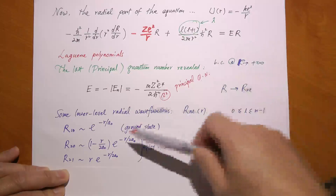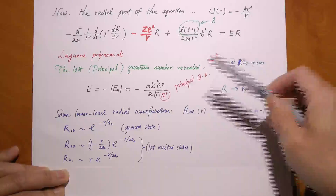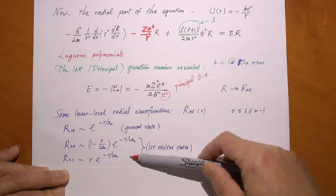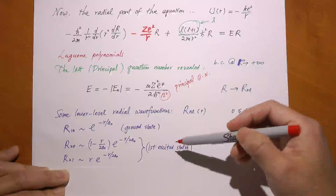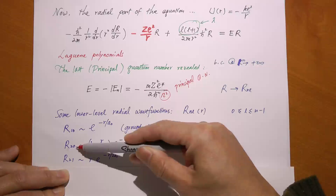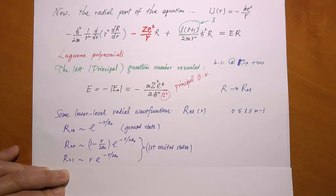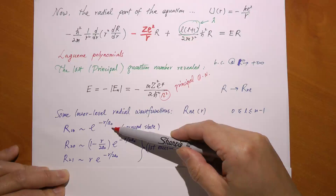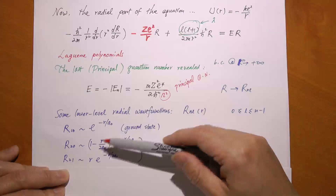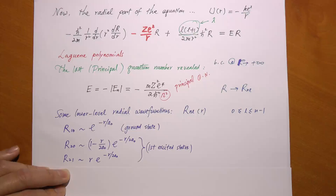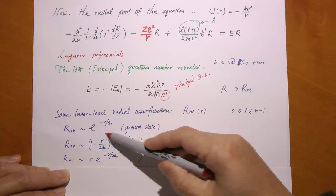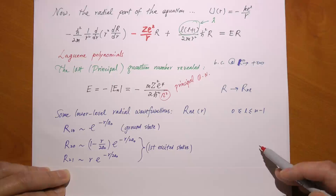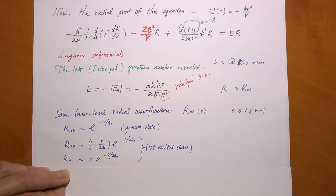Here are some of the lower-index radial wave function solutions. You can plug any of these into the radial equation to verify that the two sides are equal with the right value of n. The ground state wave function is rather simple — it's e to the negative r over a, some sort of exponential decay as we go out. We are going to take a closer look at the ground state and also n equal to two.